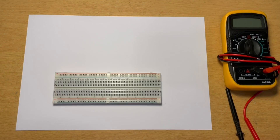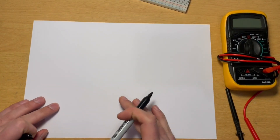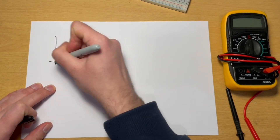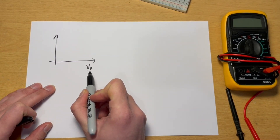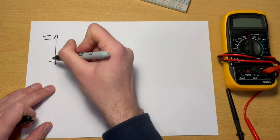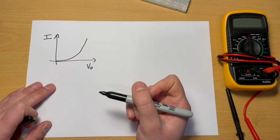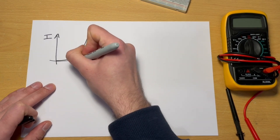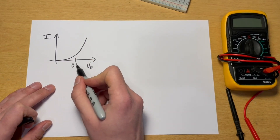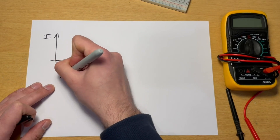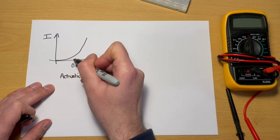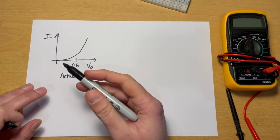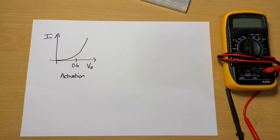In this video I want to show a very simple practical to demonstrate the diode characteristic. As a recap from previous videos, we mentioned that as the voltage across the diode (VD) increases, the current through the diode exhibits a curved characteristic. We reach around 0.6 or 0.7 volts, which we call the activation voltage, and then the current starts to increase significantly.